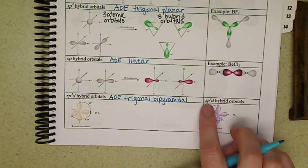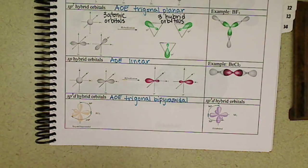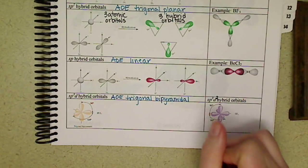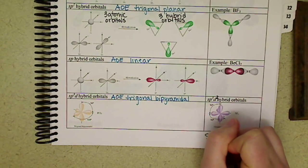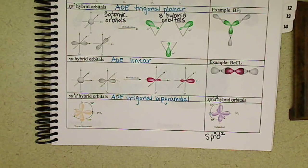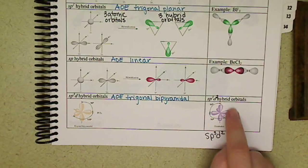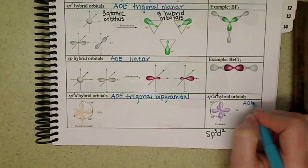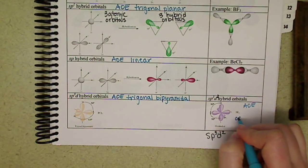Over here, this should be SP3D2 hybrid orbitals, so I'll write that down so we can see it. We have six atomic orbitals - one S, three P, two D. One plus three plus two is six. Six areas of electrons, shown all on the same axes here, and that corresponds to an arrangement of electrons of octahedral.